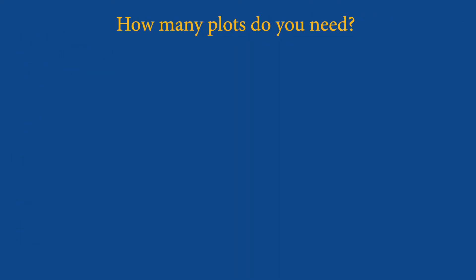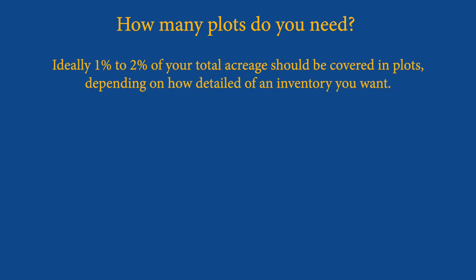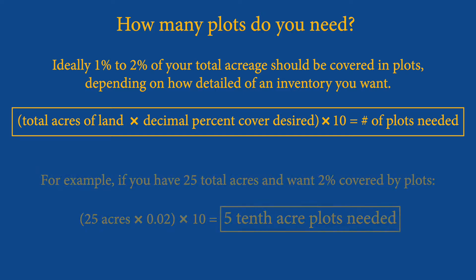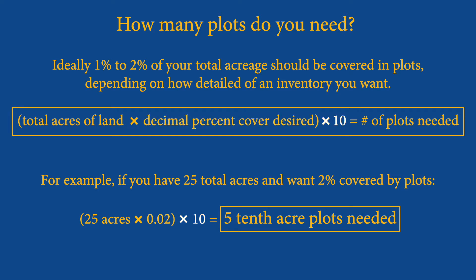When installing plots to inventory trees, it's important to consider not only their location but also the area you're covering with your plots. Installing enough plots to cover one to two percent of your acreage is typically adequate for a basic inventory. To determine how much area you need covered by plots, multiply your total forest acreage by the decimal percent you want to sample. To find the number of tenth-acre plots needed, multiply this acreage amount by 10.